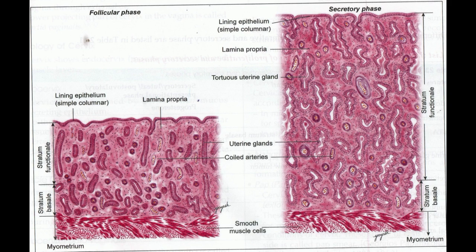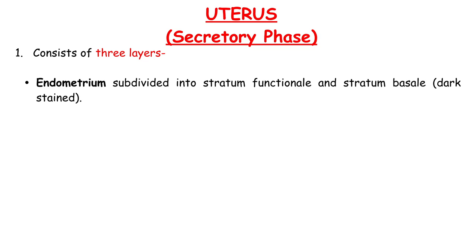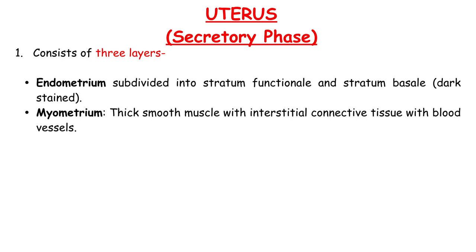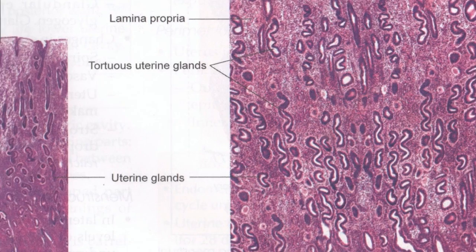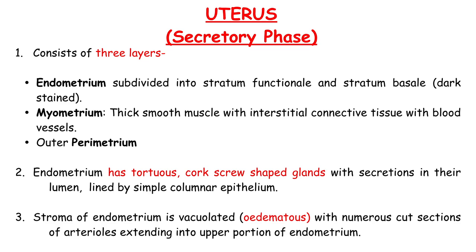Uterus secretory phase consists of three layers. Endometrium subdivided into stratum functionale and stratum basale, which is darkly stained. Myometrium contains thick smooth muscle with interstitial connective tissue with blood vessels. Outer perimetrium. Endometrium has tortuous corkscrew-shaped glands with secretions in their lumen, lined by simple columnar epithelium. Stroma of endometrium is vacuolated or edematous with numerous cut sections of arterioles extending into the upper portion of endometrium.